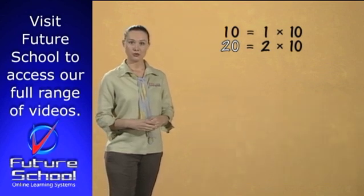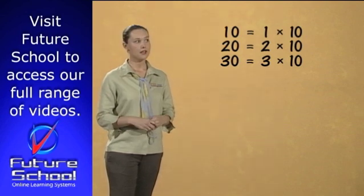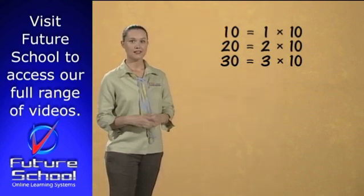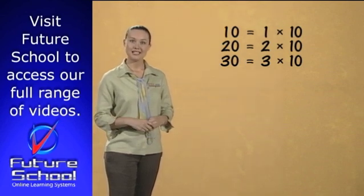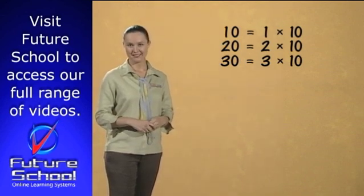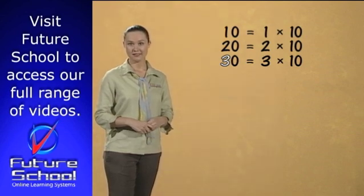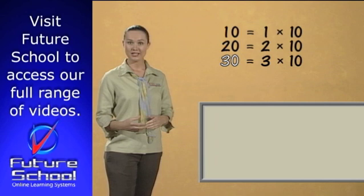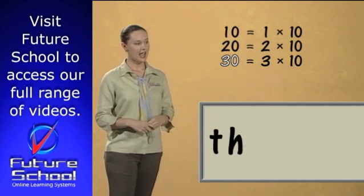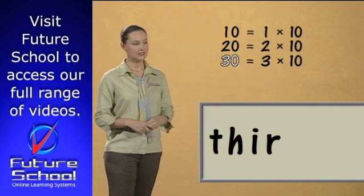The number after 2 is 3, and 3 times 10 is equal to 30, which is the next number in the tens counting pattern. 30 has 3 units of 10 and 0 units of 1. The word is written T, H, I, R, T, Y.